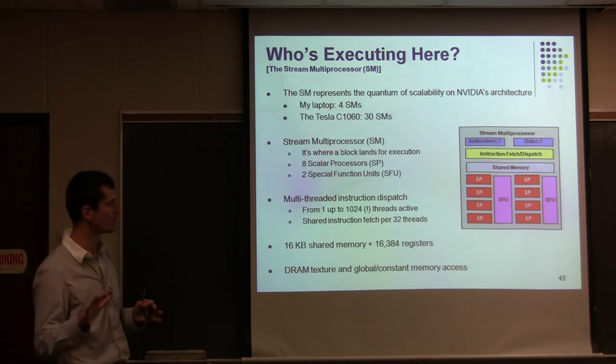So, who is executing the code? The stream multiprocessor — the SM — is executing the code. My laptop has four, and the Tesla has 30. The SM is where the block lands for execution. It has eight scalar processors and two special function units for things like cosines and transcendentals. One SM can handle anywhere from one to 1,024 threads at any time. Even though it only has eight scalar processors, CUDA uses redundancy in the number of waiting threads to avoid data starvation — and we'll talk more about that.